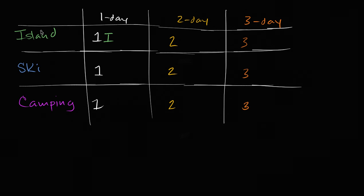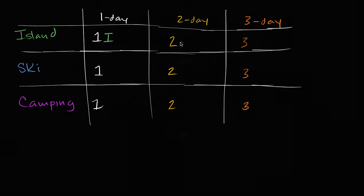And all of the ones in this row are going to be island trips. So it's a one day island trip, two day island trip, three day island trip. This second row, it's all ski trips. One day ski trip, two day ski trip, three day ski trip.